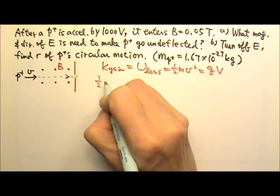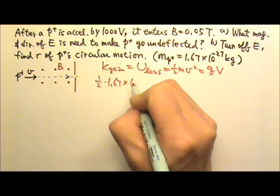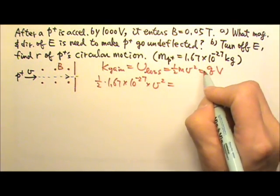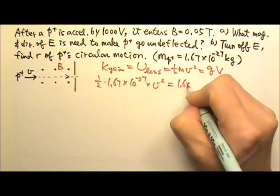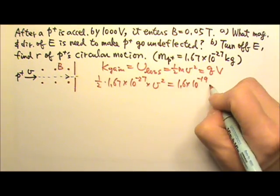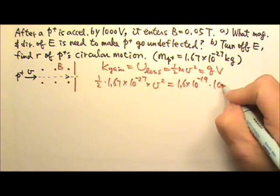So one-half m, 1.67 × 10^-27, times v² equals the charge. The charge of a proton is 1.6 × 10^-19 Coulombs, the elementary charge, times the voltage, 1,000.